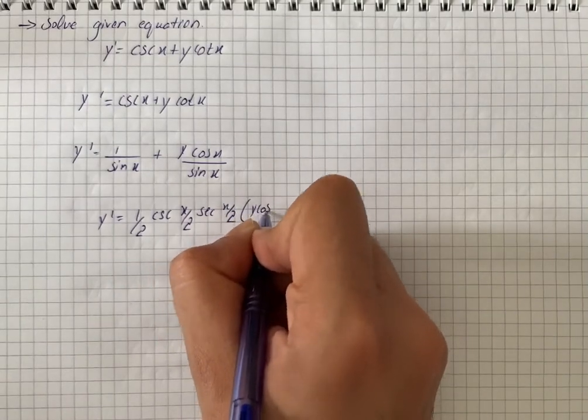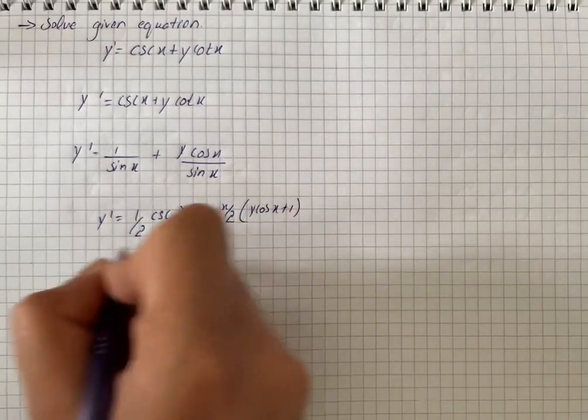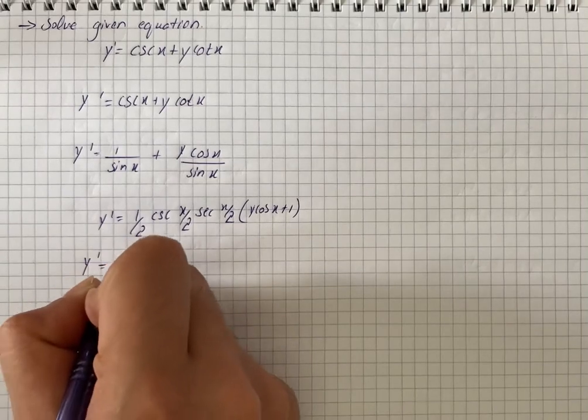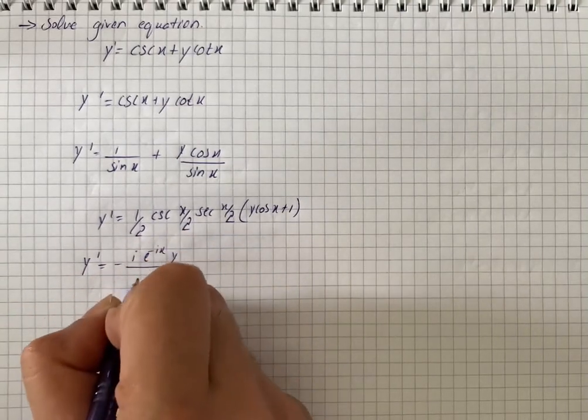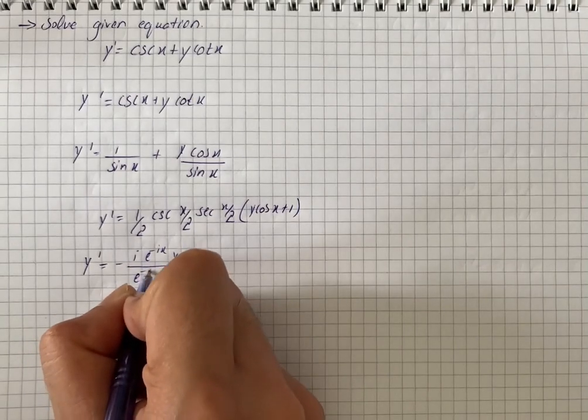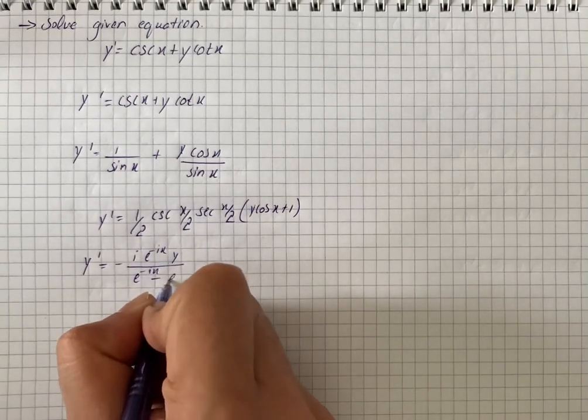Then we have y cos x plus 1. So we have y prime is equal to minus i e raised power minus i x, and then y divided by e raised power minus i x minus e raised power i x.